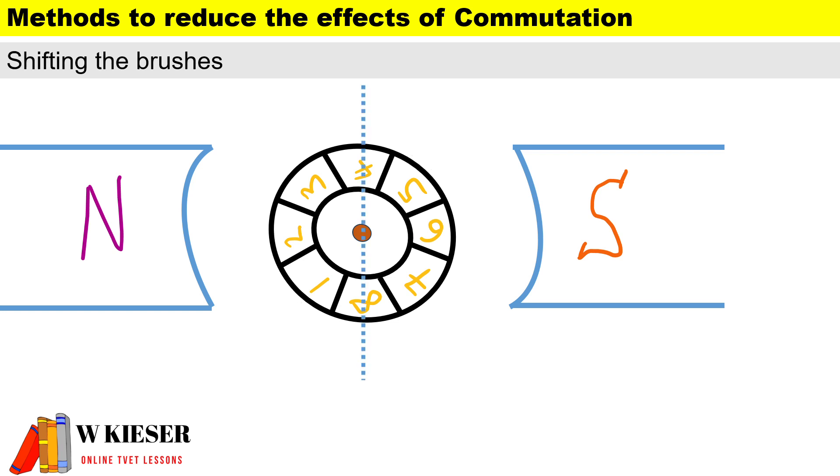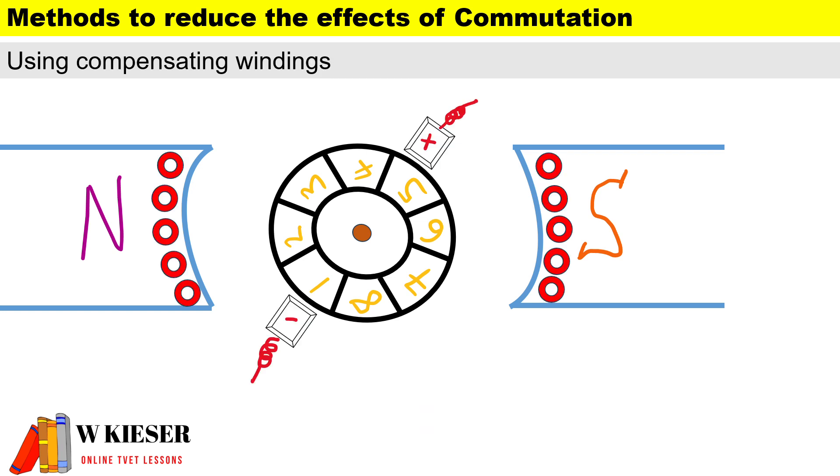We shift the brushes from the geometric neutral axis to the magnetic neutral axis. For motors we shift the brushes backwards, and for generators we shift the brushes forwards. We can also use interpoles, which are smaller poles found in between the main poles.